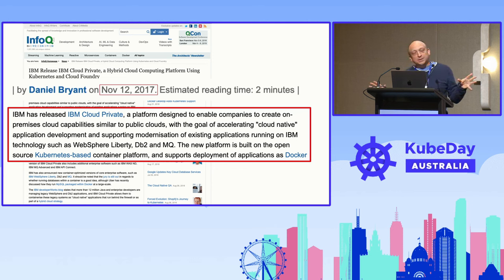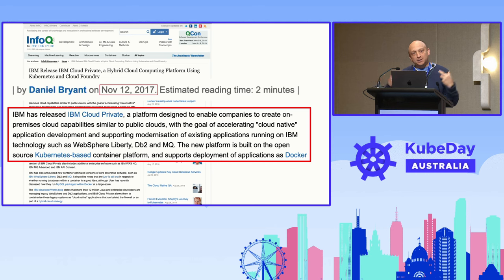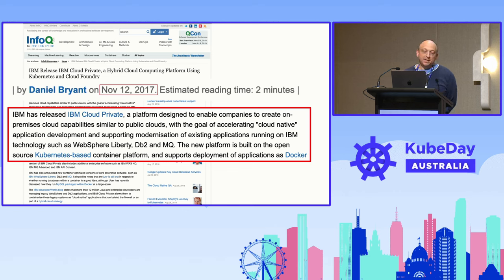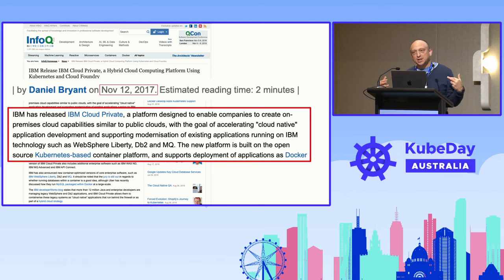IBM released a platform called IBM Cloud Private. The idea behind it was that it could bring public cloud inside. The press release said: 'IBM Cloud Private is a platform designed to enable companies to create on-premises cloud capabilities similar to public clouds, with the goal of accelerating cloud-native application development and supporting modernization of existing applications' — running on IBM technology such as WebSphere Liberty, DB2, and MQ. So it was very specific, intended to containerize IBM technology and make it run on-premises.